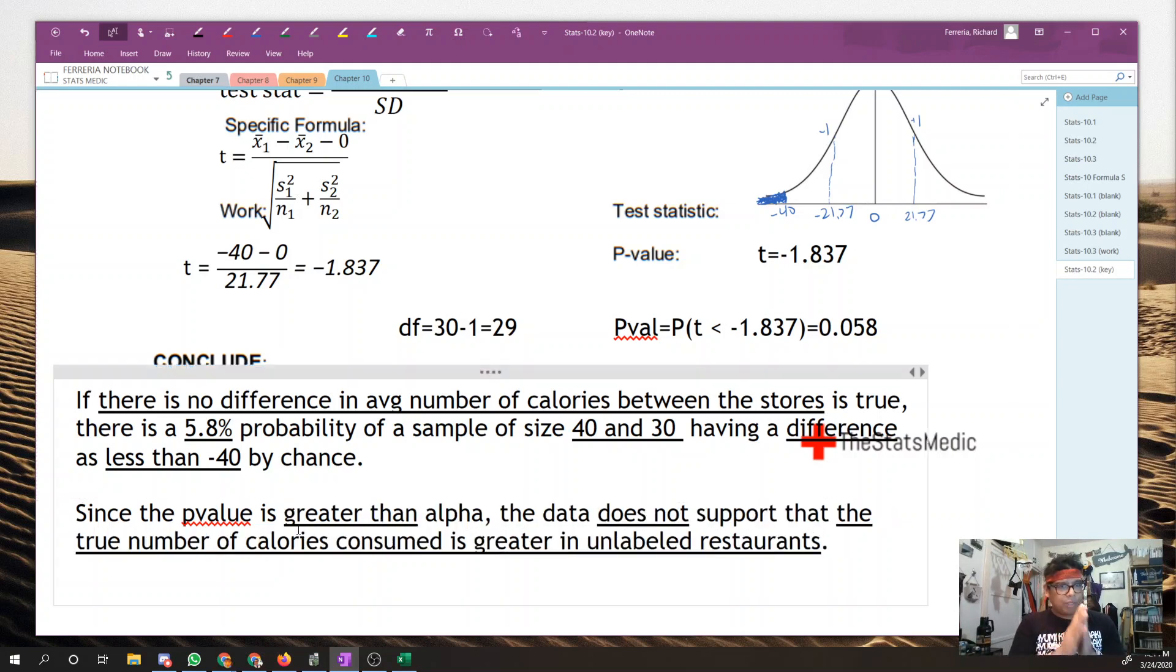So since the p-value is greater than alpha, the data does not support that the true number of calories consumed is greater in unlabeled restaurants. So that is our entire thing here. Man, that was a challenge, wasn't it? A lot to do.